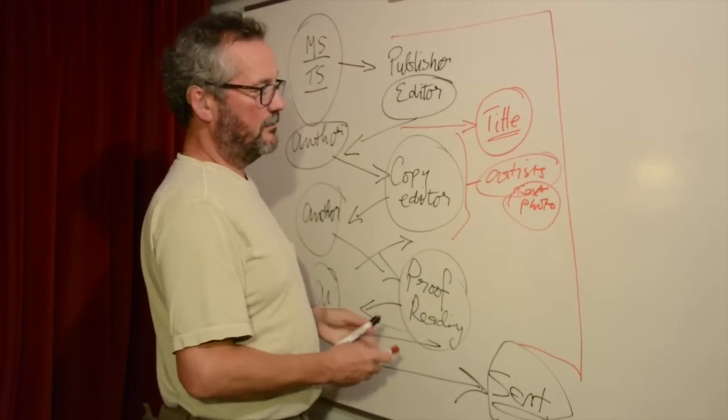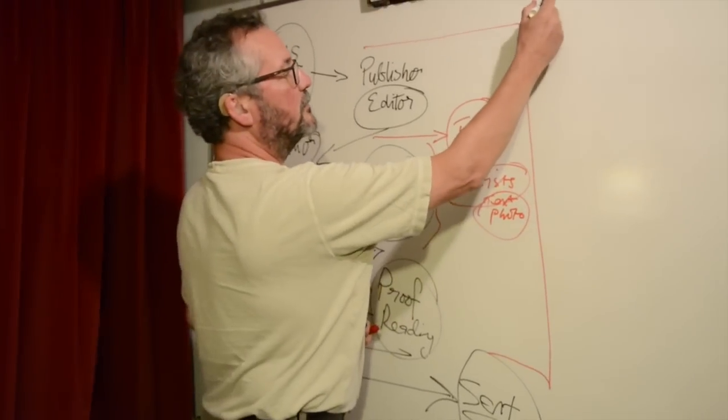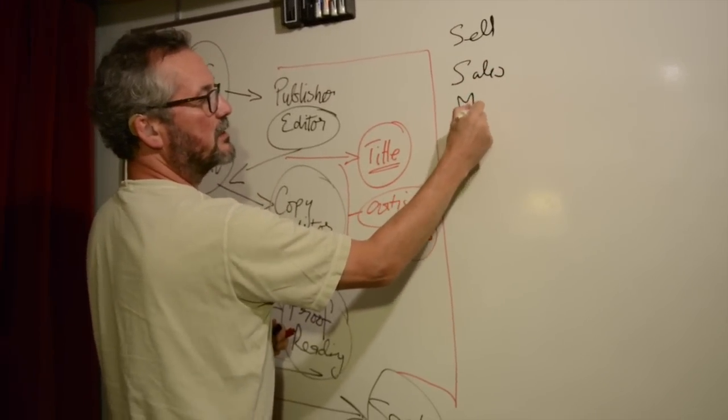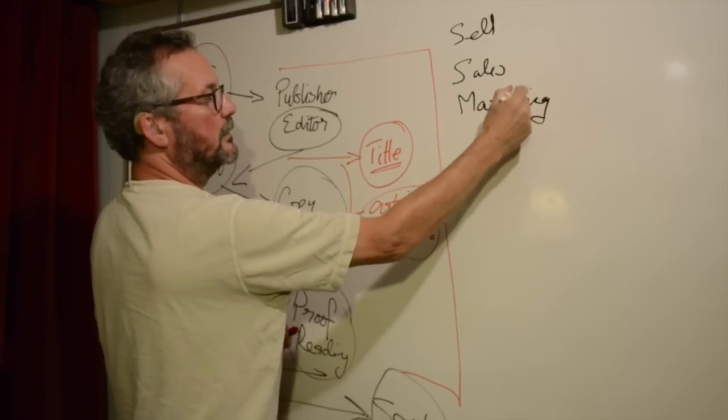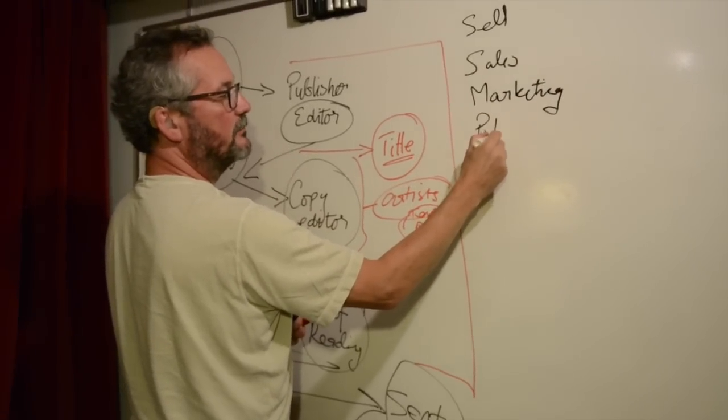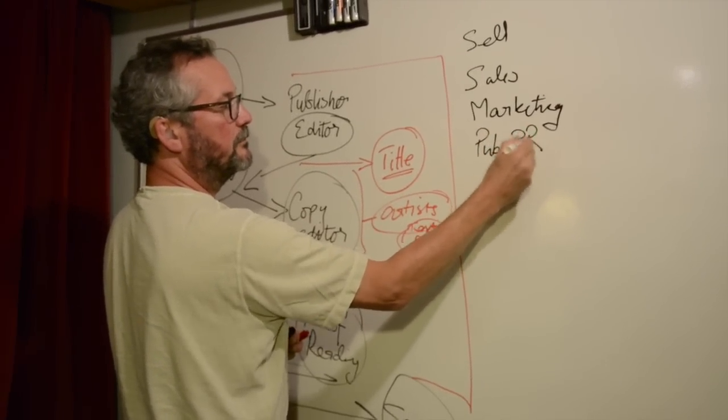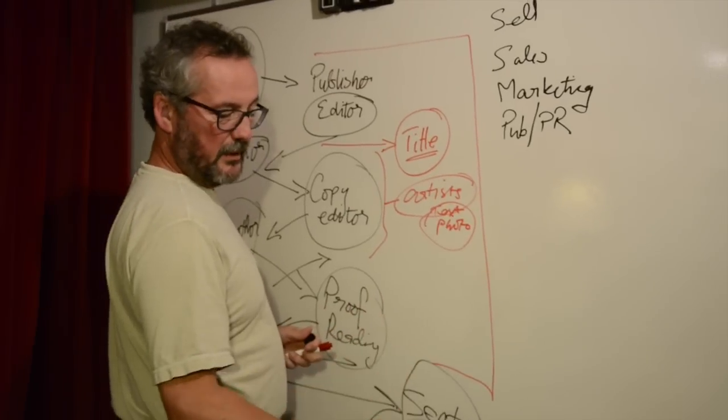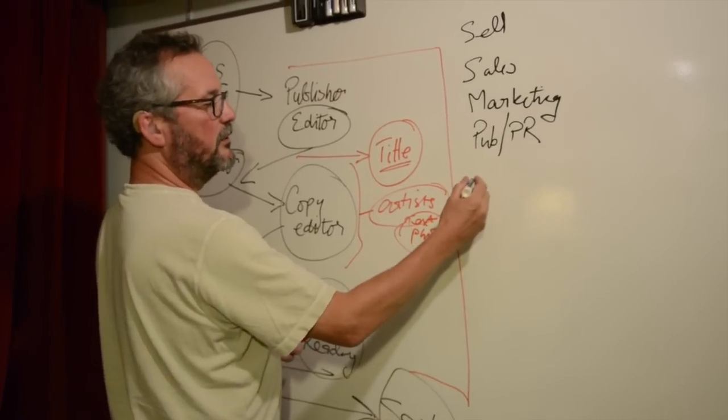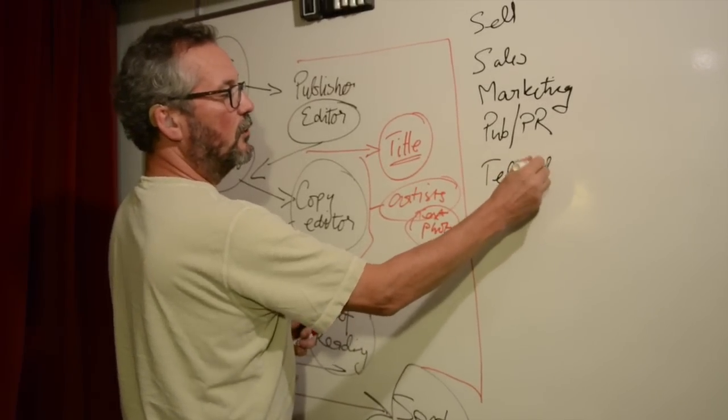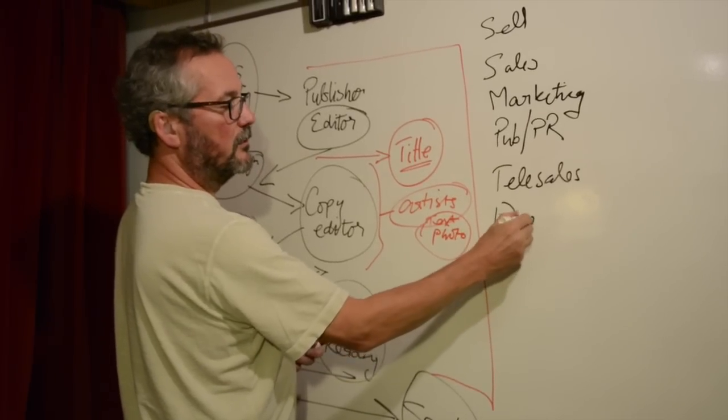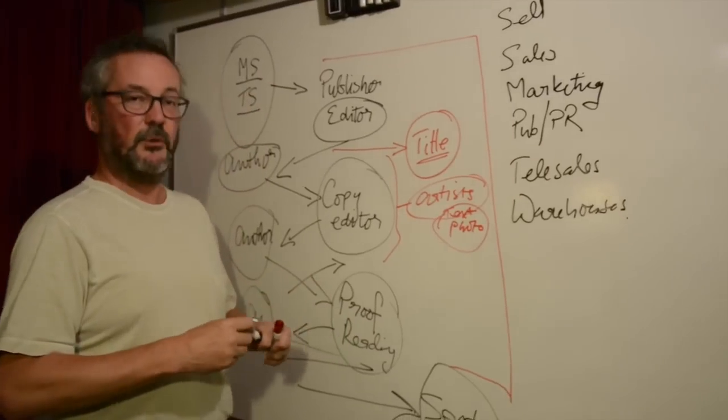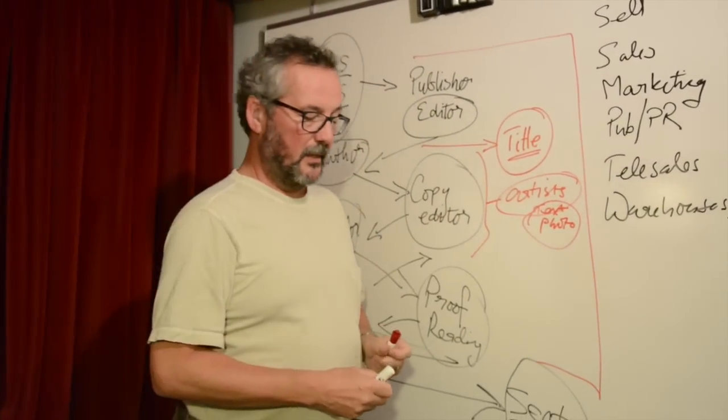When the book comes out, then you've got the extreme thrill of going out to sell the book. So, when you sell the book, there are sales staff, there are marketing staff, there are publicity and PR staff. All sorts of people to make sure that everything goes out. Now, when you get into the big groups, like Hachette and Simon & Schuster, then you've got telesales, you've got warehousing, and the supply of all the equipment from there, to make sure that the bookshops, when they order them, will get the books on time.